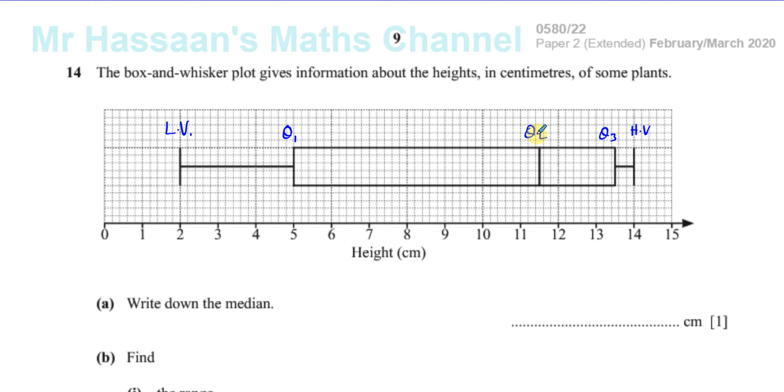Now, the median tells us the height of the plant which is right in the middle of all the data. The plant whose height is right in the middle of all the data. So there's 50% of the plants are shorter than it, and the other 50% of the plants are taller than it.